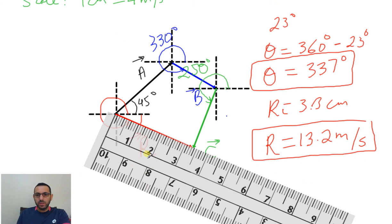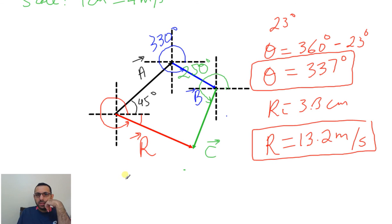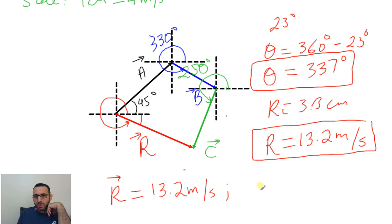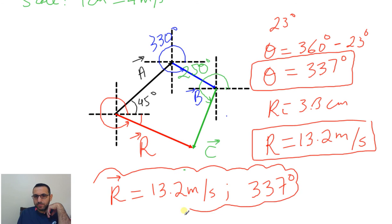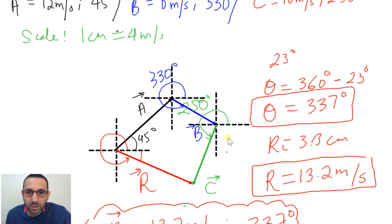So the final answer: R equals 13.2 meters per second at 337 degrees. I hope you understood this. Follow the same steps on your notebook. Be careful using the protractor to measure angles — be very accurate, because this is a graphical method. We have to be very accurate in terms of measurements, sizes of arrows, and angles.